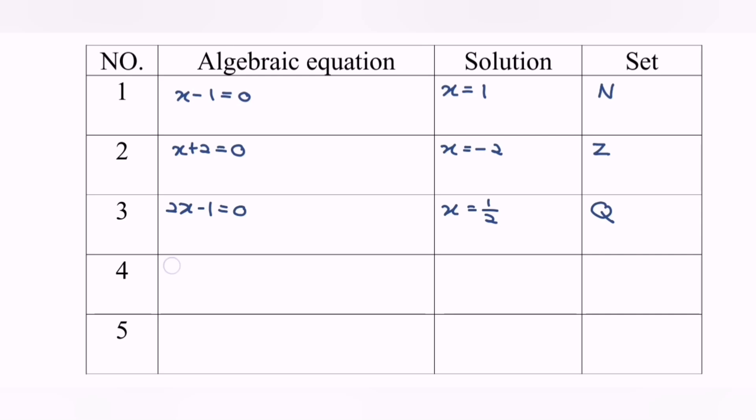Another example where we have x squared minus 2 equals 0. What is the solution for this algebraic equation? Now we have to make use of the strategy in order to find the solution, where we have to transfer the negative 2 from the left to the right. So we will obtain x squared equals 2. If we simplify the situation, x equals plus minus square root of 2.